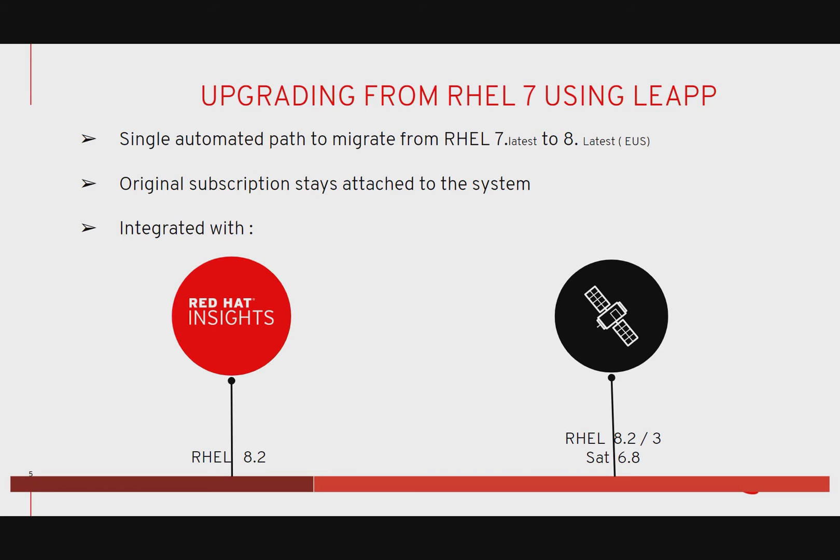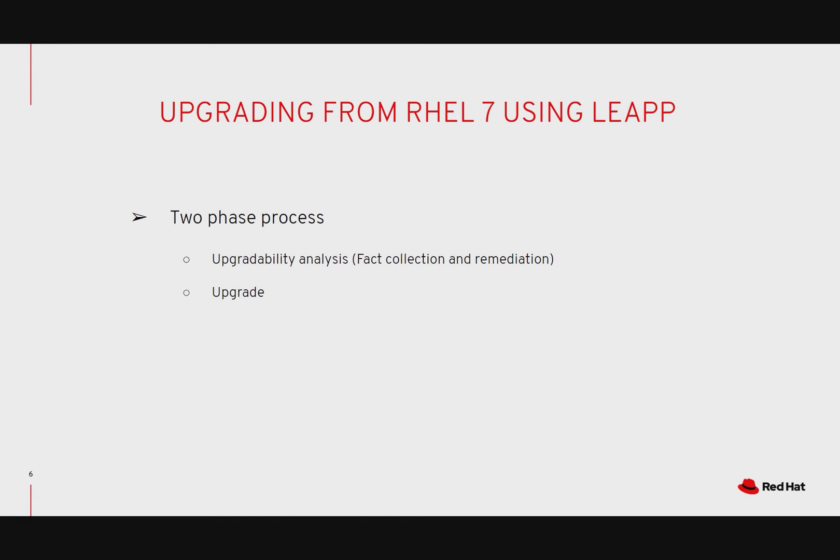Leapp is integrated with Red Hat Insights to proactively scan your environment and identify machines that are eligible for an upgrade. You can execute Leapp via command line or via the Satellite plugin application. Upgrading using Leapp is a two-phase process. The first phase is the analysis phase, where the utility makes an inventory of all the packages installed in your environment and charts a migration path for those. At the end of this phase, a report is generated. The second phase is the upgrade itself.